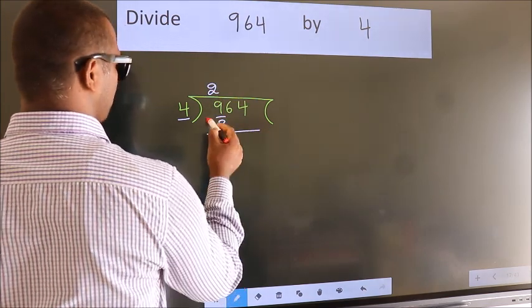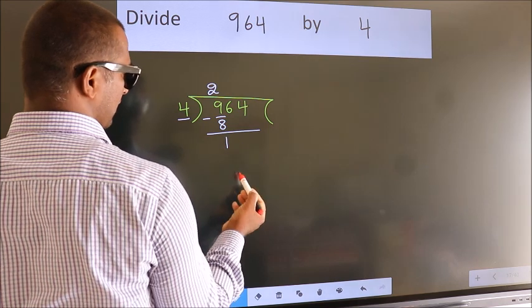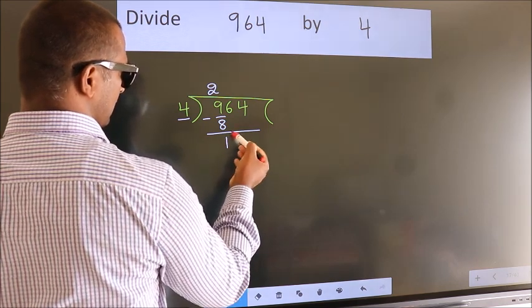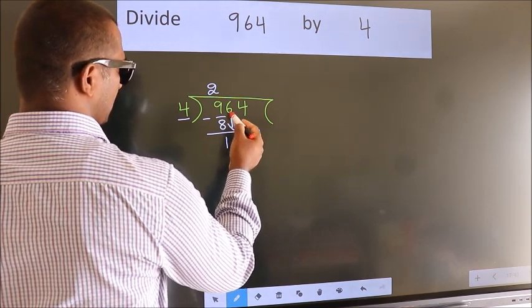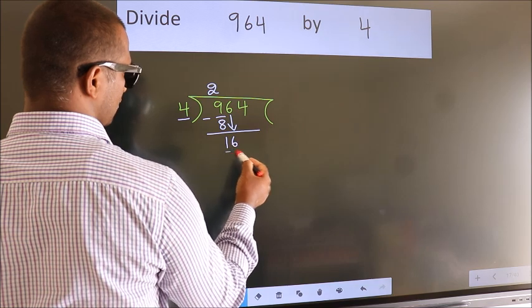Now we should subtract. We get 1. After this, bring down the beside number. So, 6 down. So, 16.